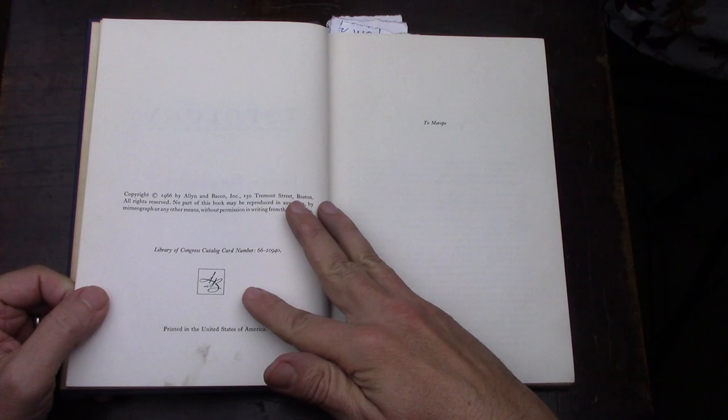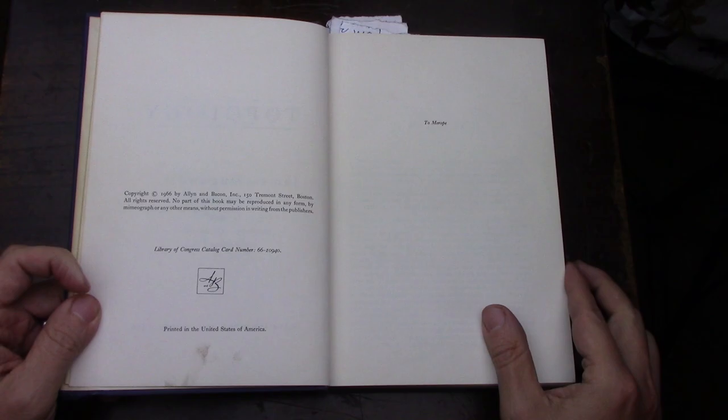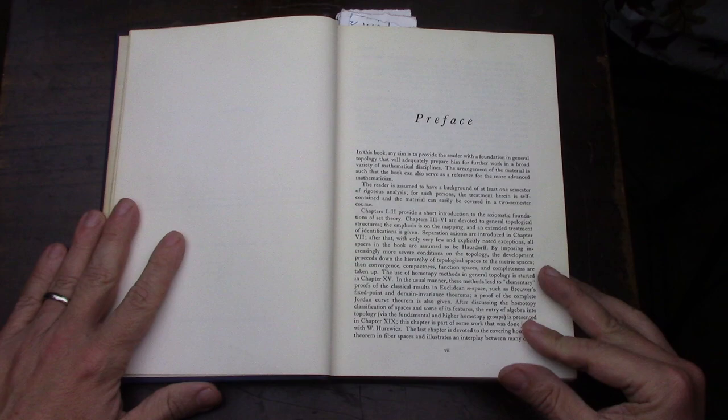USC, I imagine, is University of Southern California, and somebody paid $12.95 for this book. It looks like it's the first edition, and he probably bought it in 1960-something, around the time when I was born.